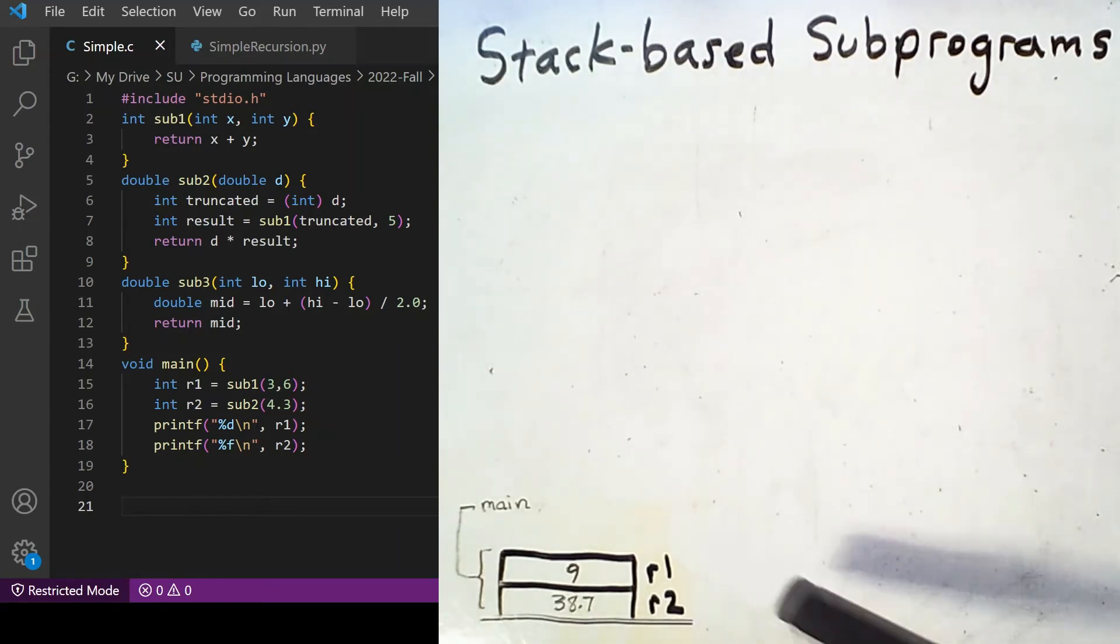And here we have our variables R1 and R2 with their values. At this point, the printf function will be called to print these values, and technically, those would also appear on the program stack, though I won't show that. And then the program would execute, the stack would be emptied, and then we're done.